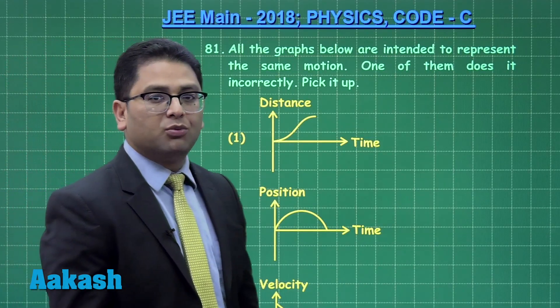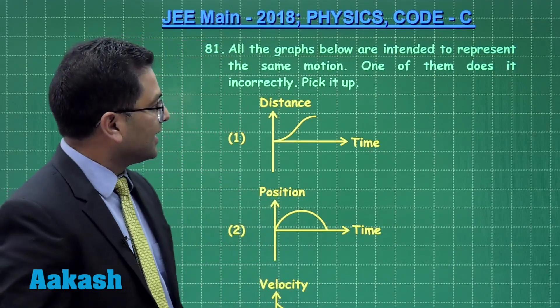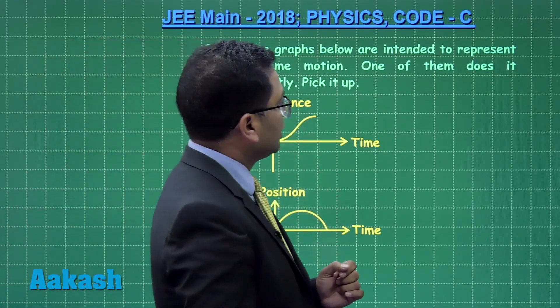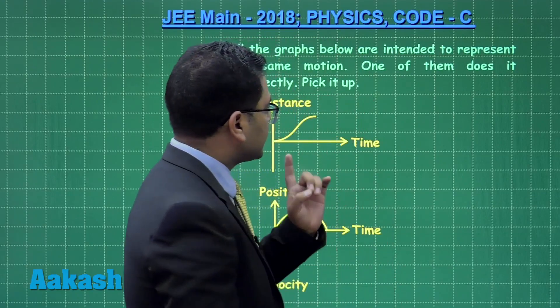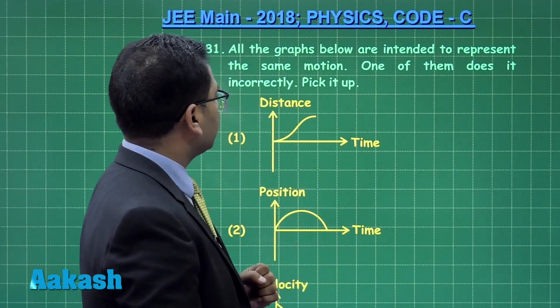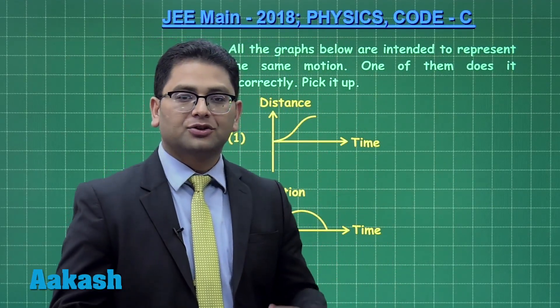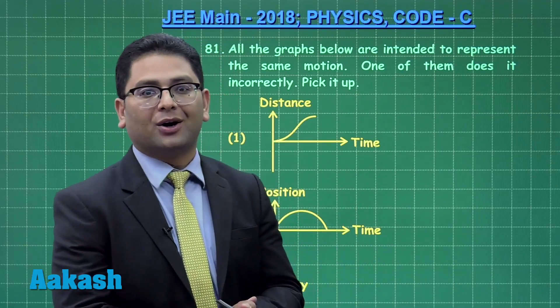Alright, question number 81 is from kinematics and it says all the graphs below are intended to represent the same motion and one of them does it incorrectly. So you need to sort out the odd man out.